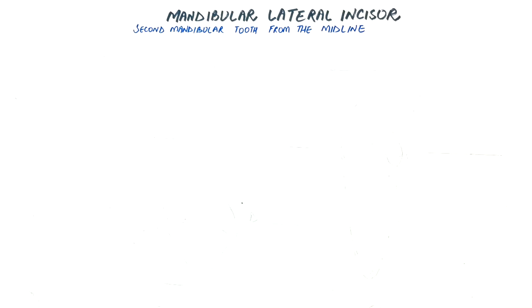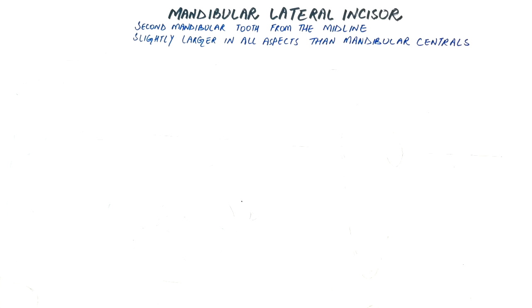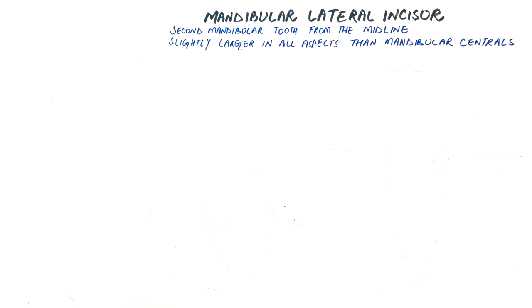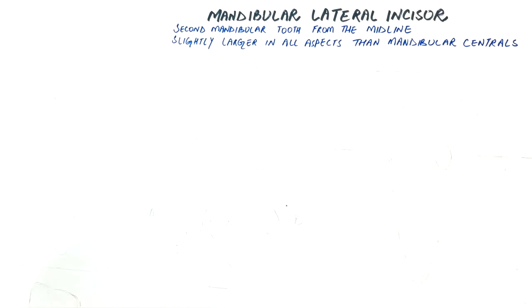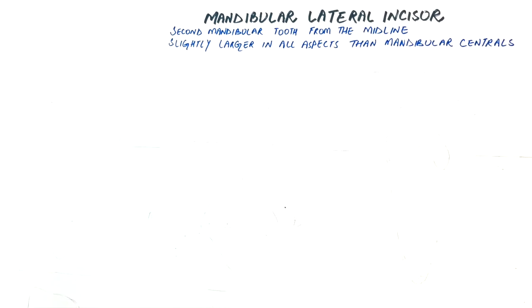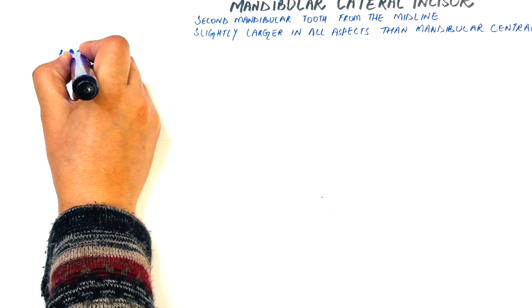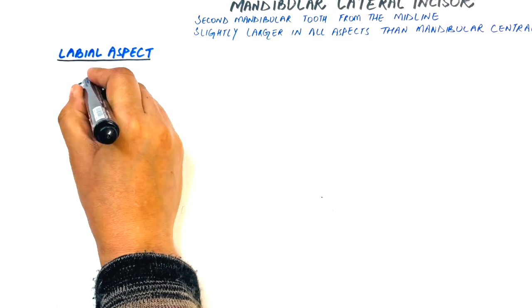Mandibular lateral incisor is slightly larger in all aspects than the mandibular central incisor. Just like the central incisor, the lateral incisor also has four surfaces and an incisal edge. Let's study each surface and the incisal edge one by one. From the labial aspect, the tooth has an incisal, mesial, distal and cervical outline.